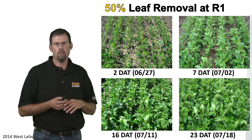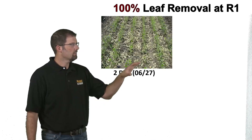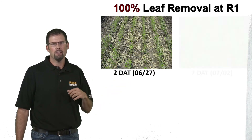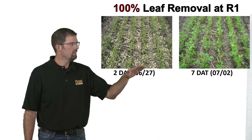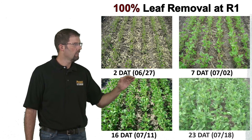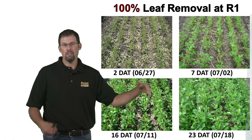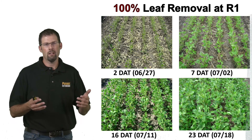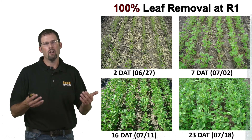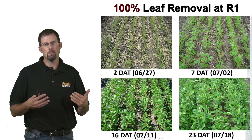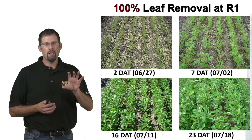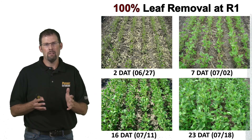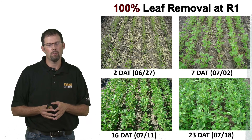Yield loss on something like 50% defoliation at R1 would be on the order of 5 to 10%. Now, if you go to 100% — everything gets taken off — the recovery time is going to take much longer. Seven days later, two weeks later, three weeks — so three to four weeks after 100% defoliation is about how long it takes to fully recover and get canopy back. In that case, we certainly are going to have some yield loss, maybe on the order of 25%, give or take. So leaf loss earlier in the season at R1 has some effect, but not nearly as much as when we go into our later reproductive stages.